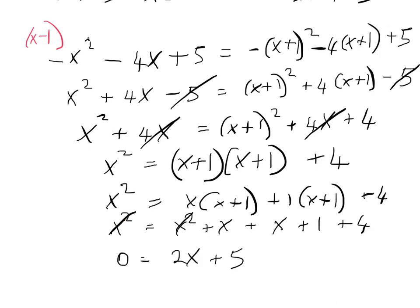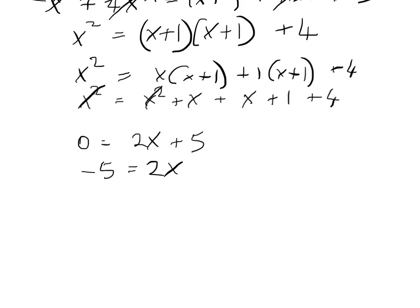This gives us 0 equals 2x plus 5. Notice we don't end up with a quadratic equation, so we don't get two answers — it's just a simple linear equation. To solve it, bring the 5 across the equals sign, so it becomes minus 5. Then bring the 2 across — since it's multiplying x, it divides when moved across. So x equals minus 5 over 2. That's your answer; you've solved the equation.